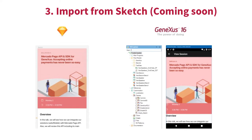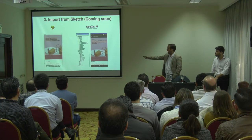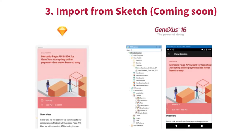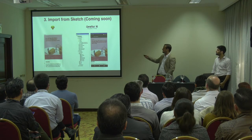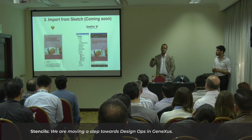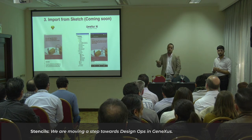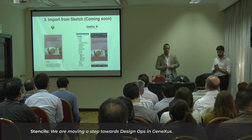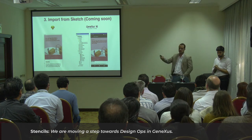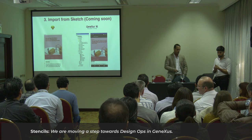The next way to create stencils, coming soon, is on the basis of extensions sent by designers — for instance, Sketch. On the right-hand side of the screen, you can see the Sketch file with its screens, designs, and navigation. What I'm going to do from GeneXus is import that file. GeneXus creates SD panels, stencils, and navigations between those panels, so you'll be able to execute with a raw design without code. You would then only need to modify the behavior.